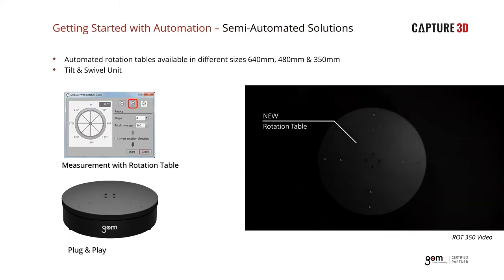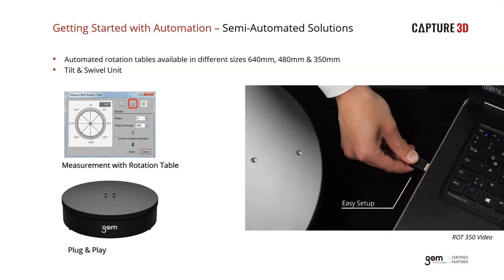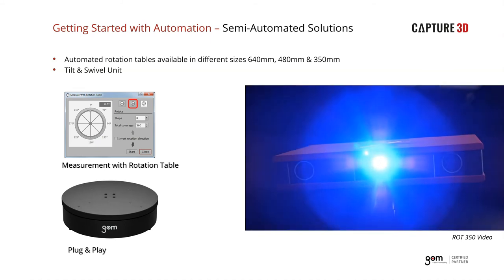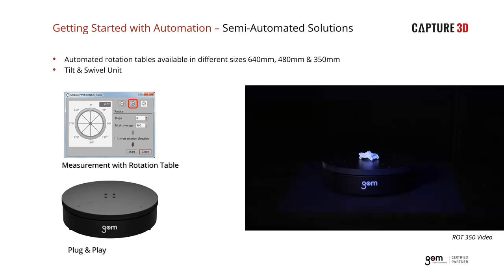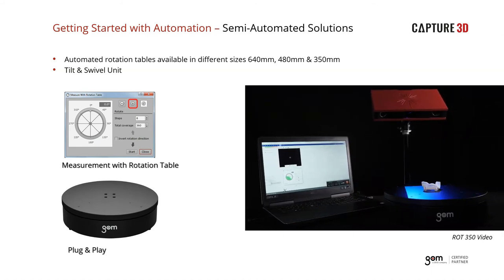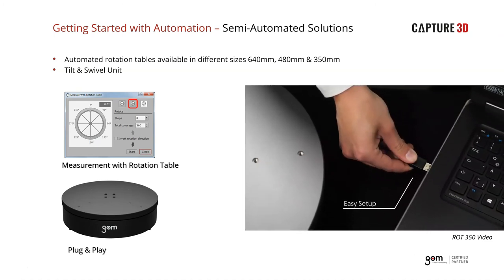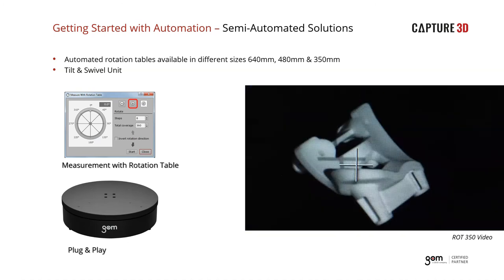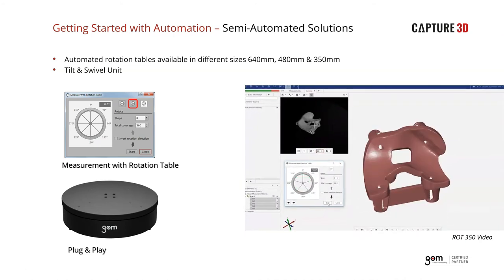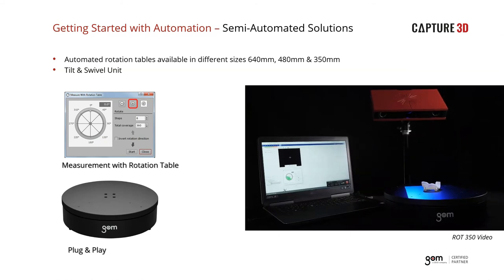The first level of automation in our semi-automated solution is the rotary stage. People often think automation requires a robot, safety systems, laser sensors — that's not necessarily the case. Automation simply means automating a task. The ROT 350 is a plug-and-play automated rotary stage. Instead of manually rotating a table, this stage rotates by itself. If you have a manual setup and want a little more throughput without having to articulate your scanner or part manually, this is a great option. It interfaces with the software very simply — plug-and-play.